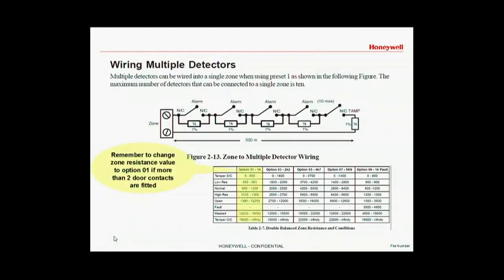If wiring multiple doors on a single zone, we need to change the option to option 01 from the default option 09. This is because if more than two doors were open you would indicate first fault, and then as more doors were opened you'd be in a mask condition. So reprogram the zone input to be 01.